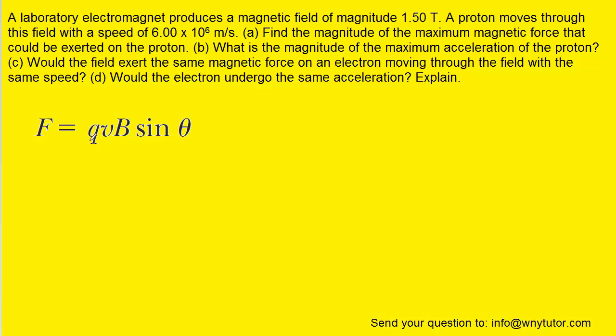For the charge Q, since the particle is a proton, we can simply use the charge on a proton, which has a standard value. V is the speed, which is given to us in standard units, and then B is the magnetic field strength, which is also given to us in standard units. So we can just go ahead and plug everything in now.